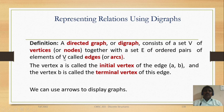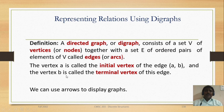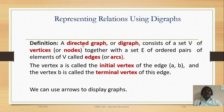The edges are ordered pairs of elements of V, called edges or arcs. A directed graph which consists of a set of vertices and edges is called a digraph. The vertex A is called the initial vertex of an edge, and vertex B is called the terminal vertex of the edge. We can use arrows to display the graphs. A digraph means a directed graph — a directed graph in the sense that it has directions, meaning it has arrows.